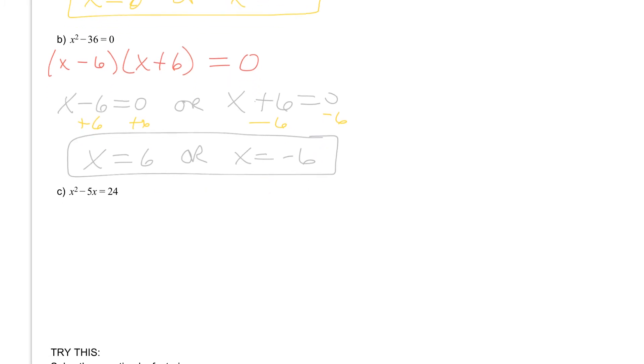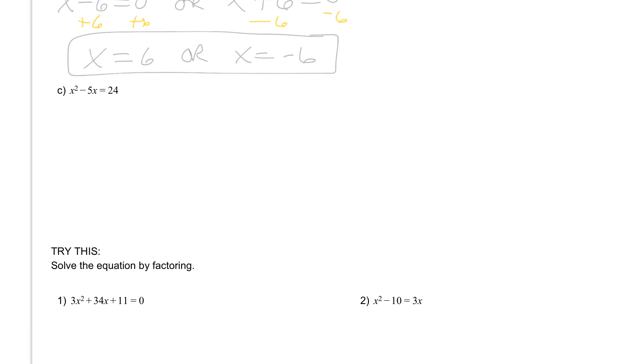Then if I take a look at letter C, I have x² - 5x = 24. Remember we are using the zero product property. In order to do that, we have to have our equation set equal to zero.